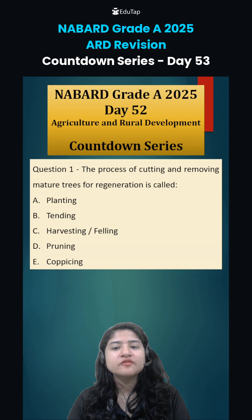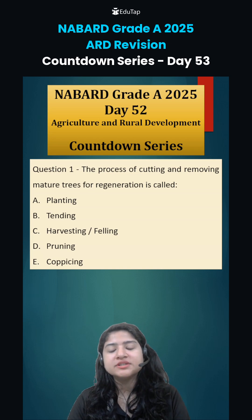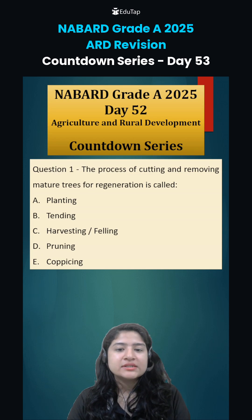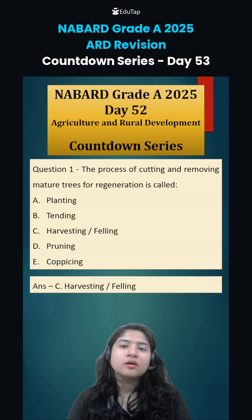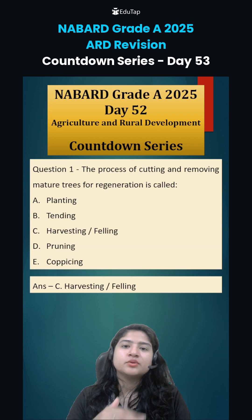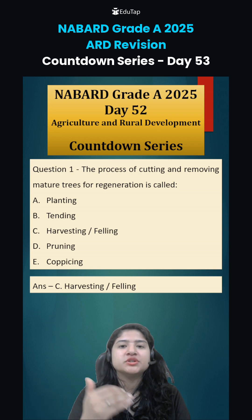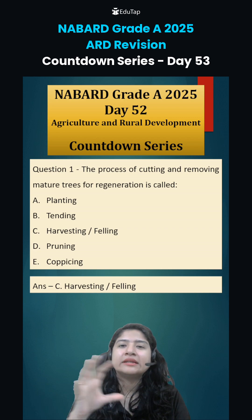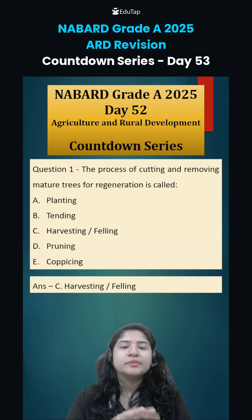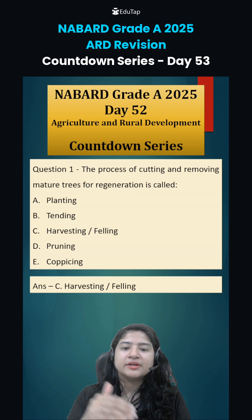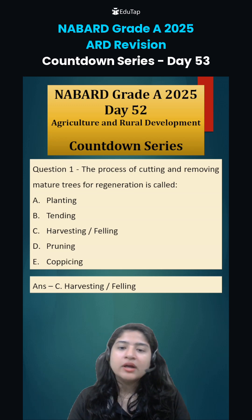Question number one: the process of cutting and removing mature trees for regeneration is called harvesting or felling. There are three processes: first, felling is done, then regeneration happens, then intercultural operation and other management happens, and finally it's again felling or harvesting.